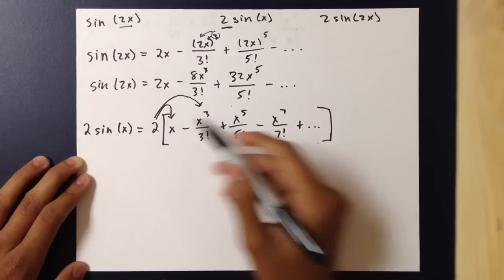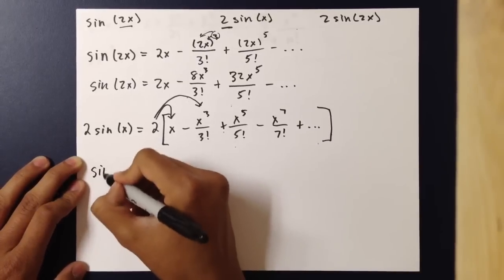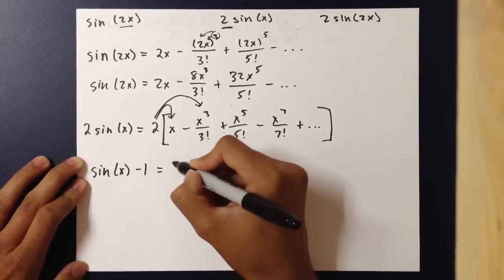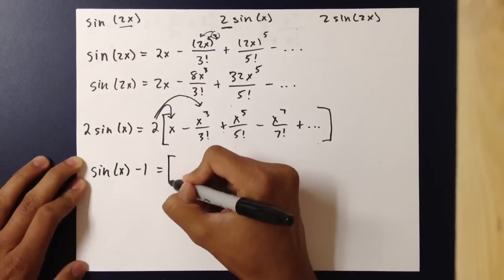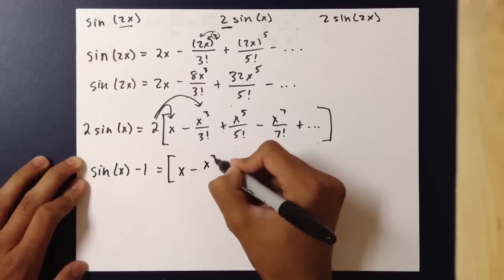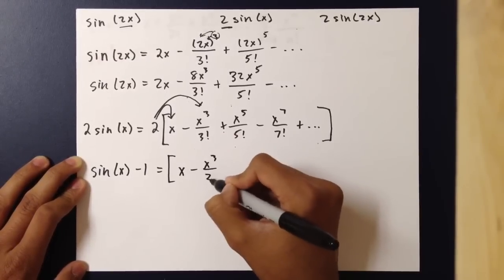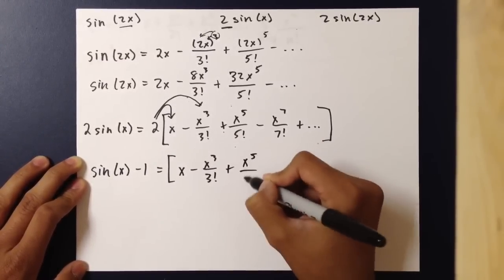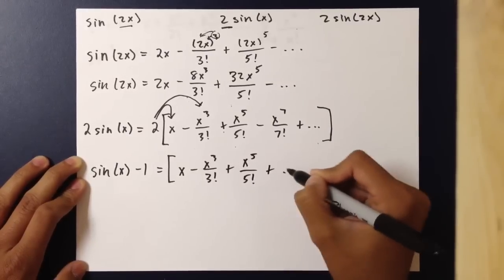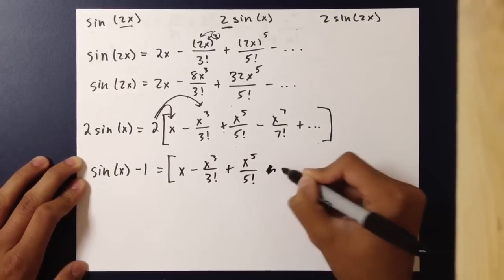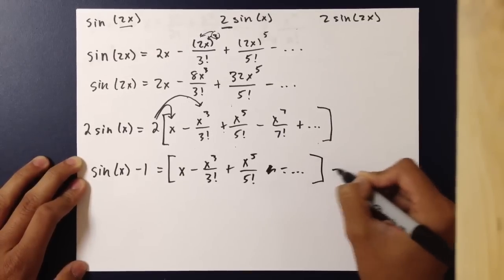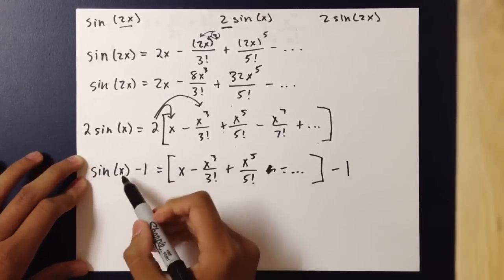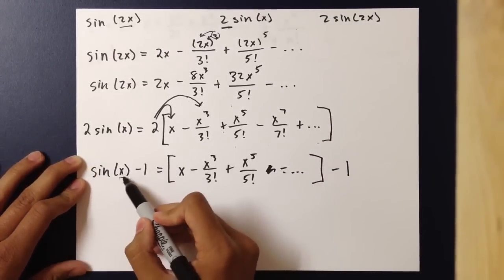So if it was subtraction, and it was sine of x minus 1, you would take the whole polynomial and subtract 1 from it, since the 1 is not inside with the x.